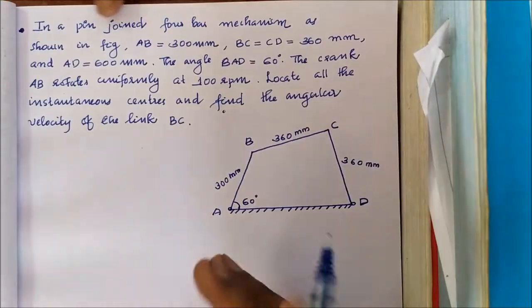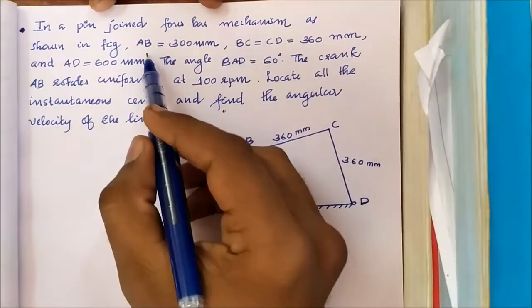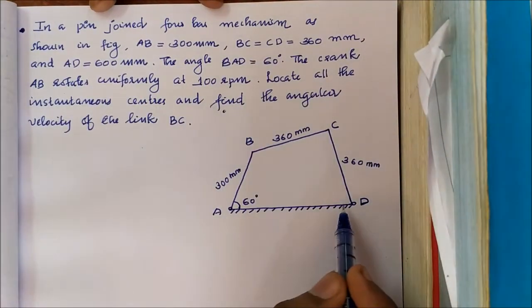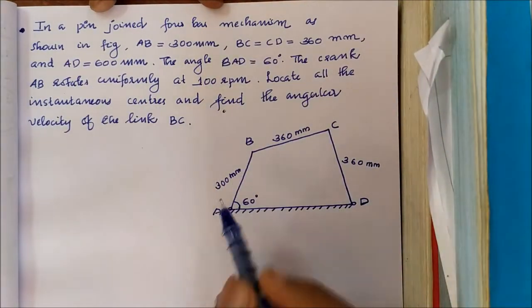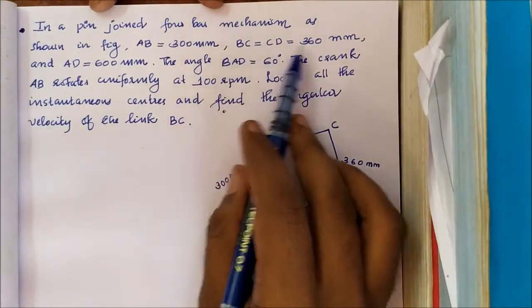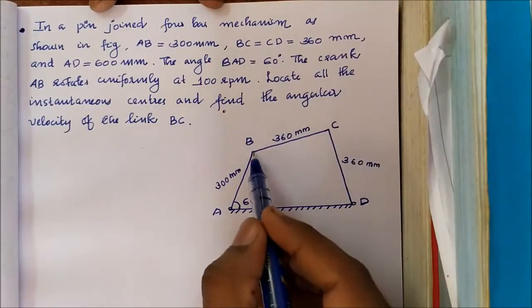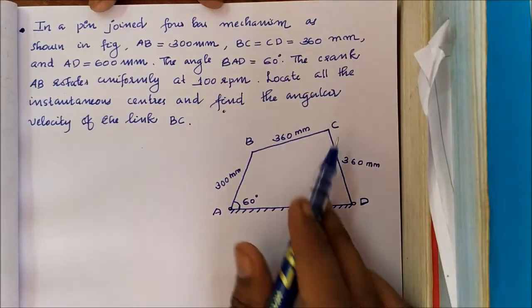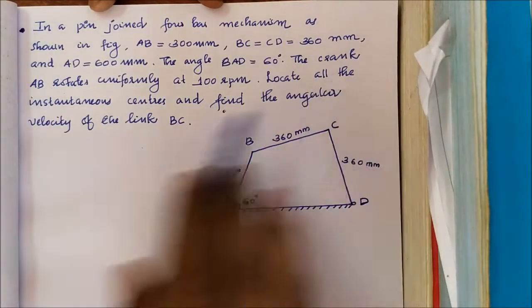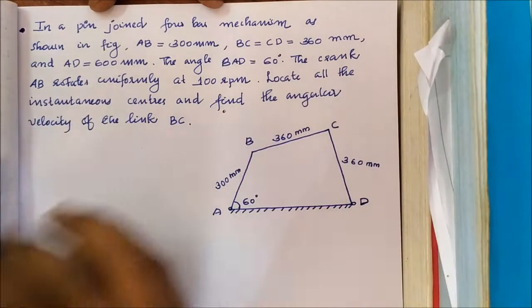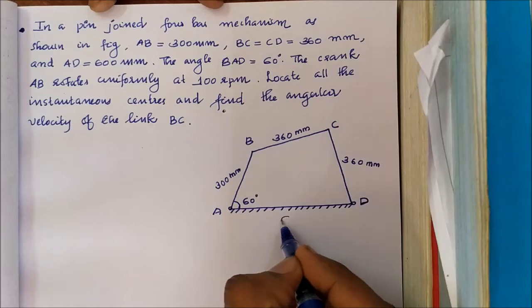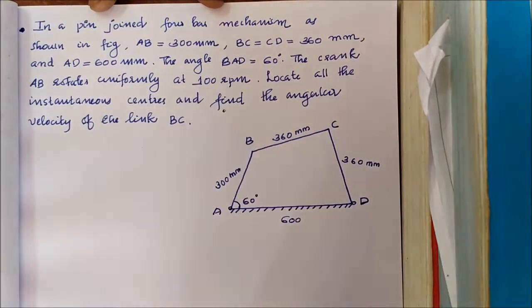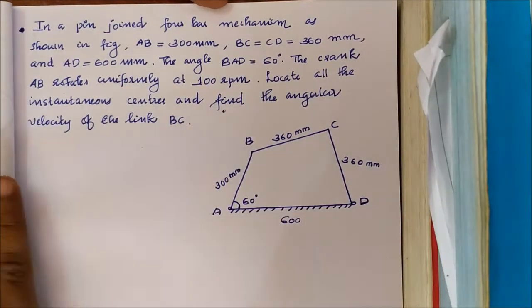AB is equal to 300. BC and CD are equal to 360. AD is equal to 600. The angle BADC is equal to 60 degrees.